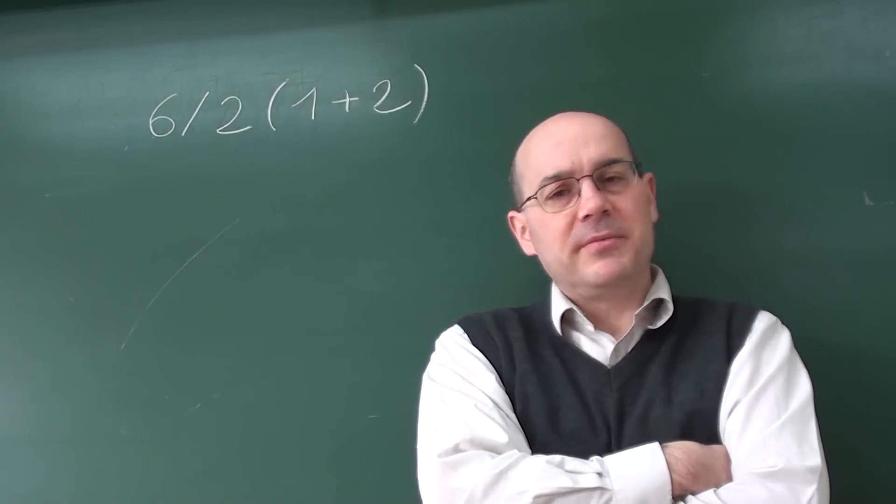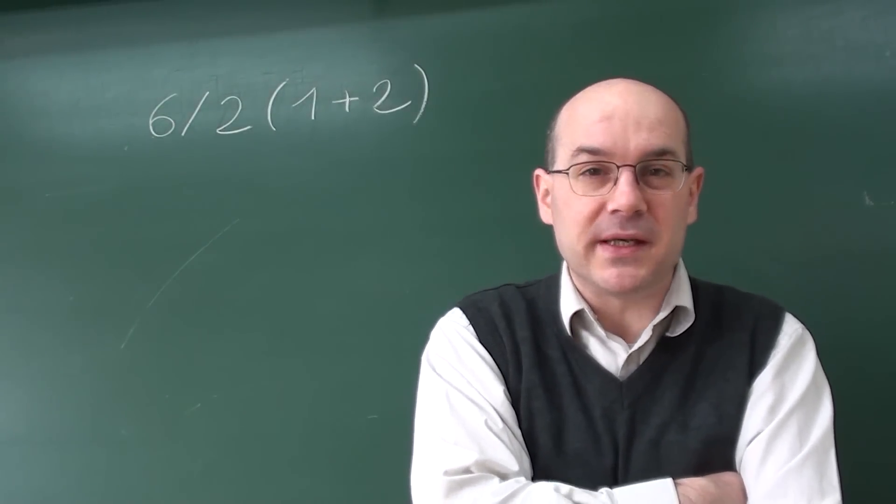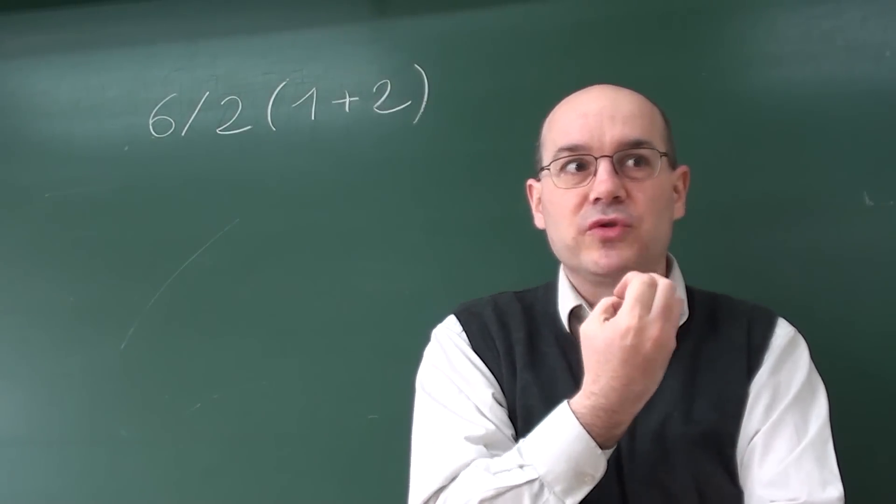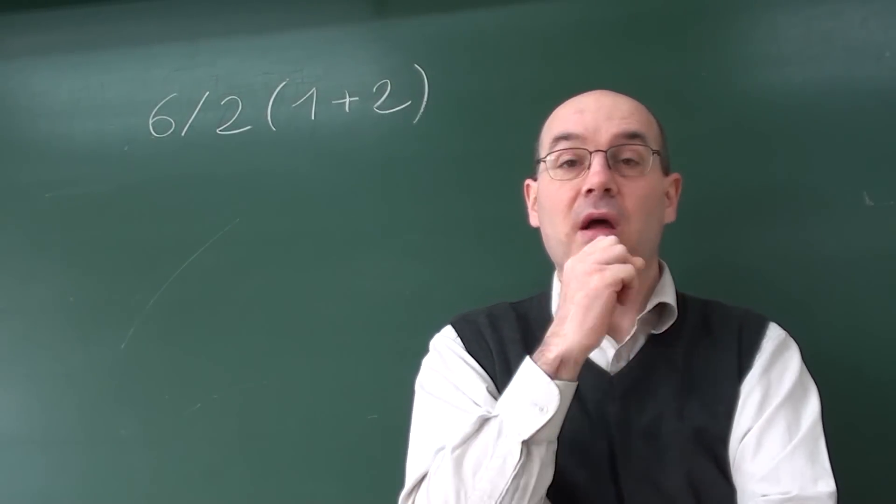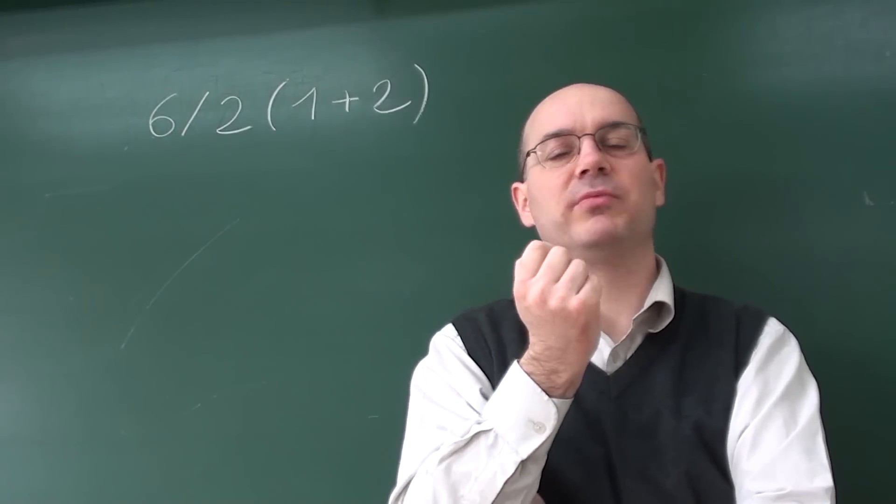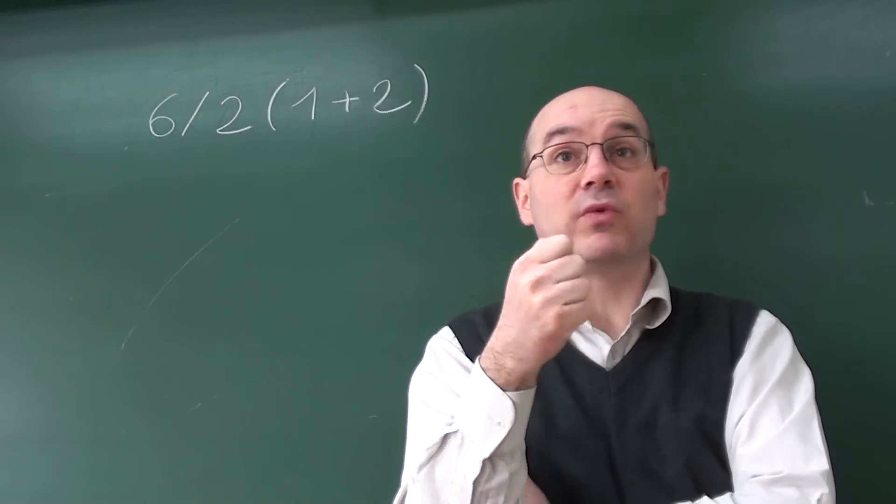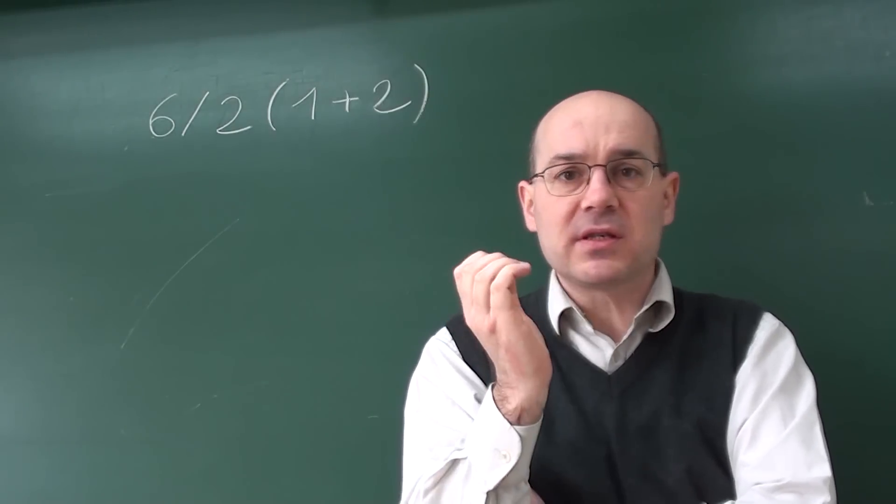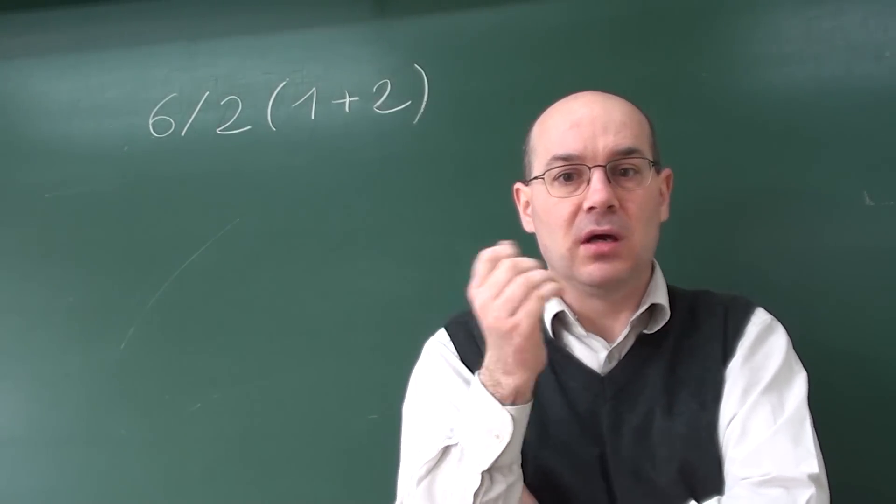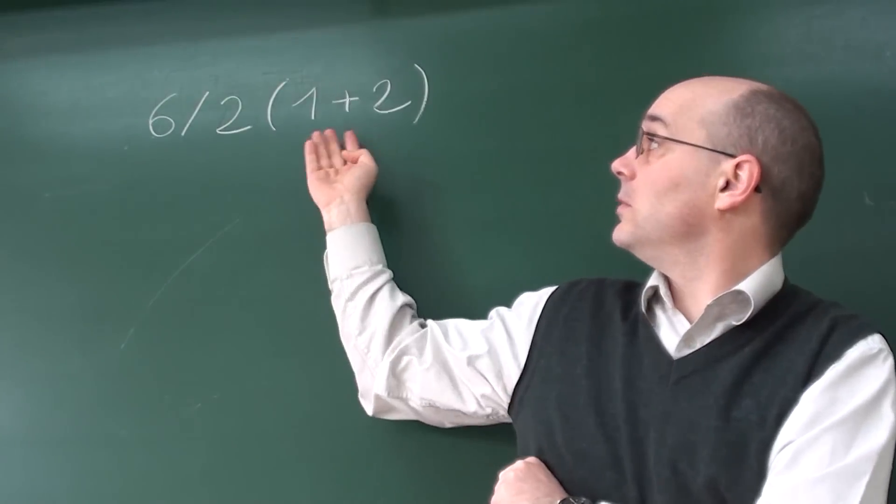So I gathered lots of people's arguments, and here are what I think are the common mistakes. The first mistake is that some people feel like an urge to distribute. This comes from algebra, but actually you don't have to distribute. If you can calculate first what lies inside the parenthesis, well, you can do it.